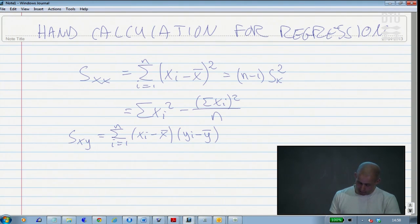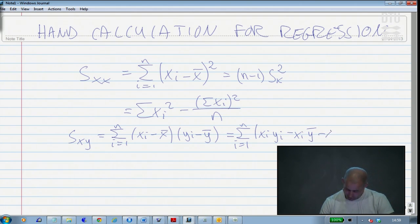So this one, we can go on and do the multiplication of the terms. And then it becomes the sum, I'm going to find the hand calculation formula, that would be x_i y_i minus x_i y bar minus x bar y_i and then plus x bar y bar. That is just taking the two by two terms of the sum here.